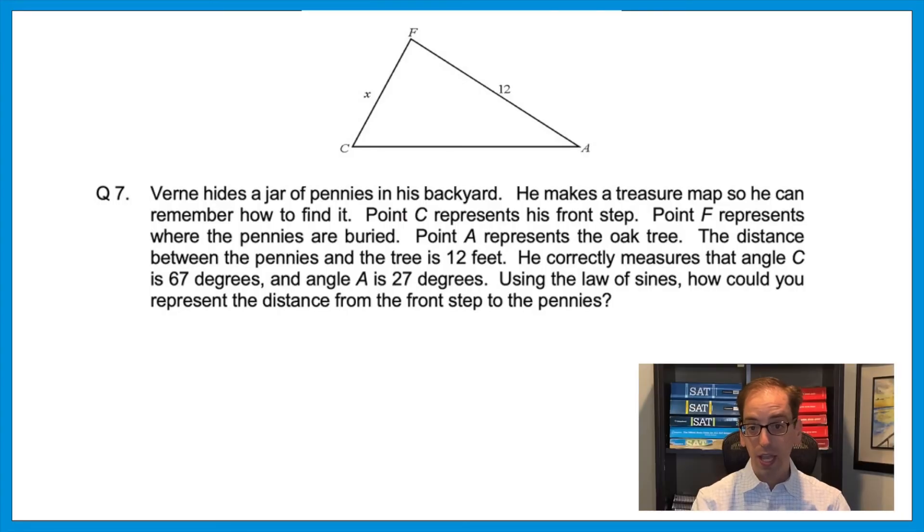Let's try it on one more harder trigonometry question. Vern hides a jar of pennies in his backyard. He makes a treasure map so he could remember how to find it. Point C represents his front step. Point F represents where the pennies are buried. Point A represents the oak tree. The distance between the pennies and the tree is 12 feet. He correctly measures that angle C is 67 degrees and angle A is 27 degrees. Using the law of sines, how could you represent the distance from the front step to the pennies? Now I'll give you the law of sines, because usually when the ACT wants you to use that, they'll tell you that formula. The law of sines states sine of A over A equals the sine of B over B. What that means is the sine of any angle over its corresponding side equals the sine of any other angle over its corresponding side. Use that data, press pause, and give it a shot.